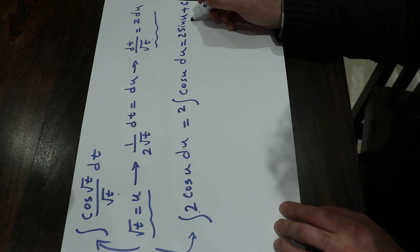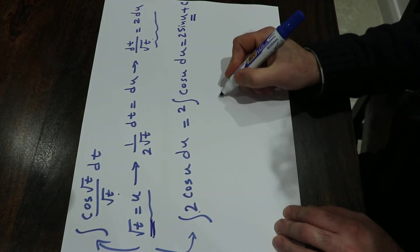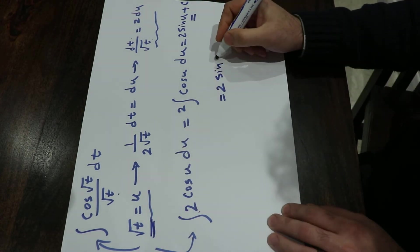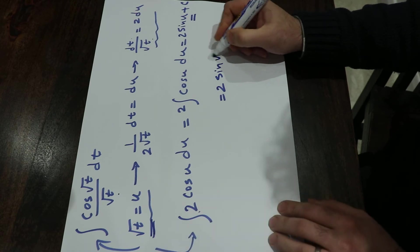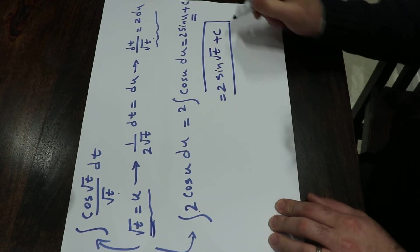All you need to do now is to substitute the parameter u with this function you defined at the beginning, which will be equal to 2 sine u, instead of u, I put the function s square root of t plus c. And that is the solution to your integral.